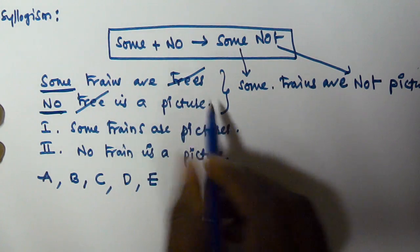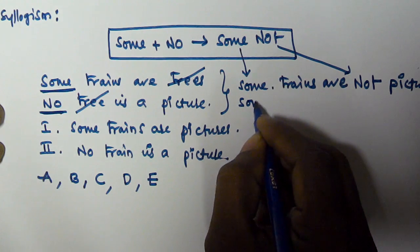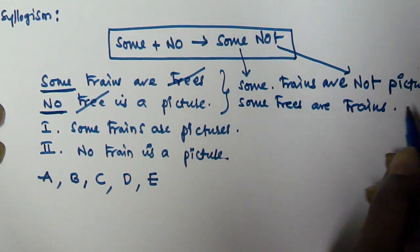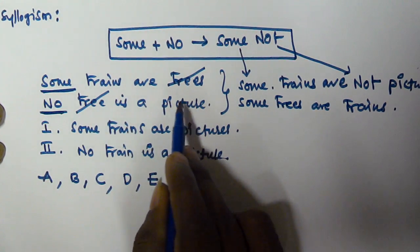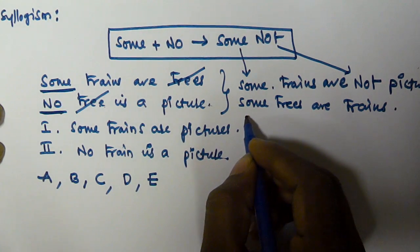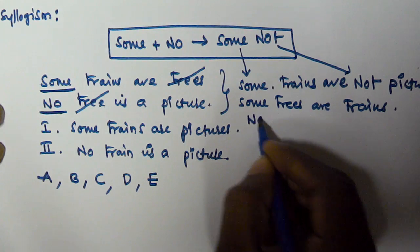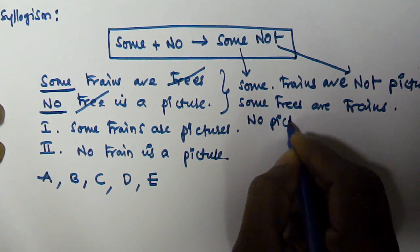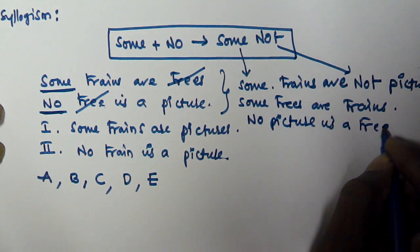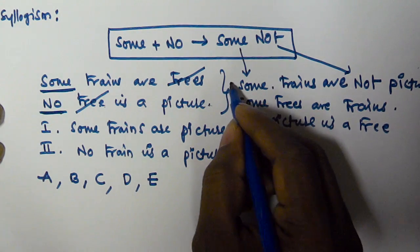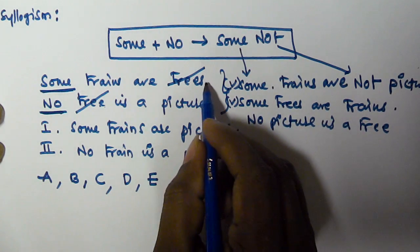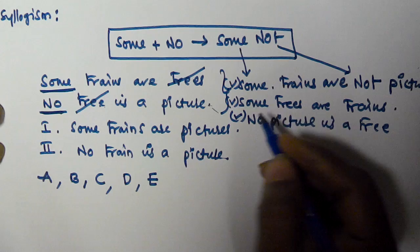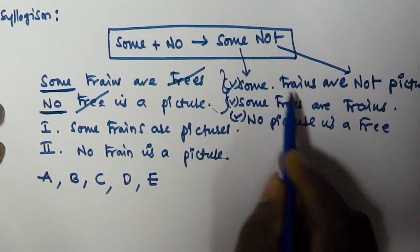Additionally, from the first syllogism alone: if some trains are trees, then some trees are also trains — so we can derive 'some trees are trains.' From the second syllogism alone: if no tree is a picture, then no picture is also a tree — so we derive 'no picture is a tree.'